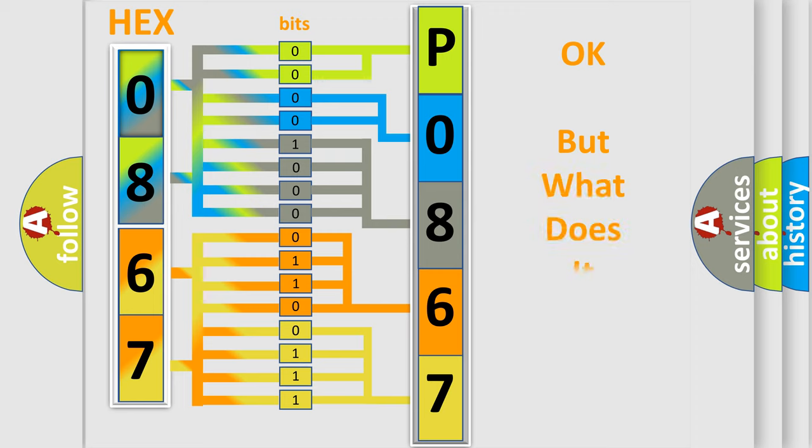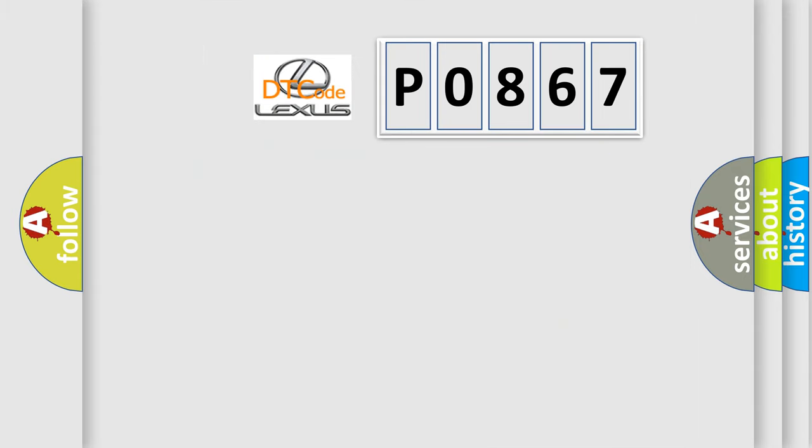We now know how the diagnostic tool translates the received information into a more comprehensible format. The number itself does not make sense to us if we cannot assign information about what it actually expresses. So, what does the diagnostic trouble code P0867 interpret specifically for Lexus car manufacturers?